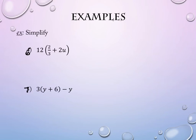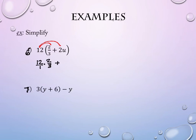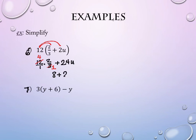On number six, there is a fraction. We're still using the distributive property, but now I have to do 12 times two-thirds. That's 12 over one times two over three. What's 12 times two U? 24U. For the 12 over 1 times 2 over 3, we can simplify first — divide 12 and 3 both by 3, making it 4 times 2, which is 8. So this becomes 8 plus 24U.